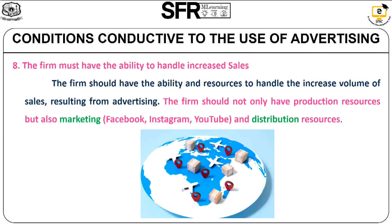The eighth condition is the firm must have the ability to handle increased sales. The firm has to concentrate on increasing sales by following two methods: marketing and distribution resources. By using marketing techniques through Facebook, Twitter, Instagram, and YouTube channels, sales are automatically increased, and thereby distribution happens to customers at the right time and at the right place.